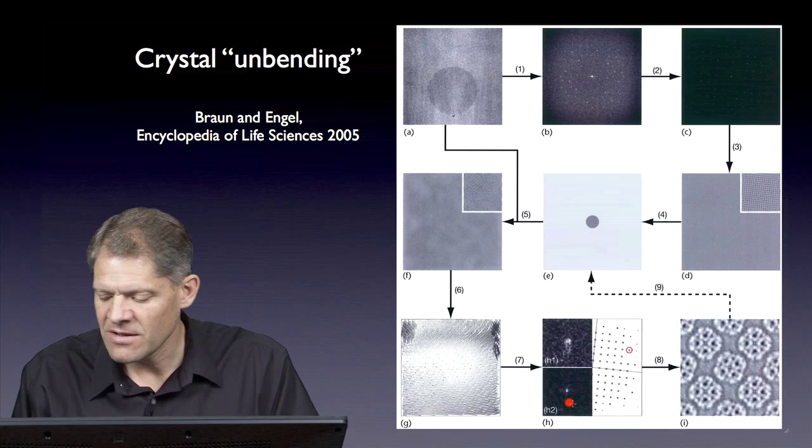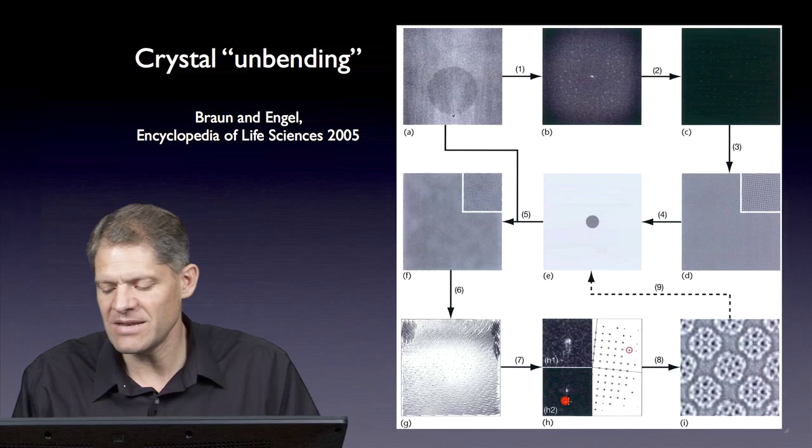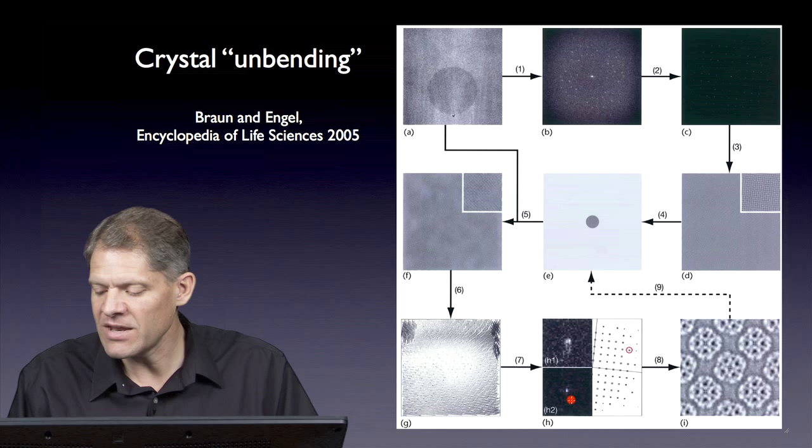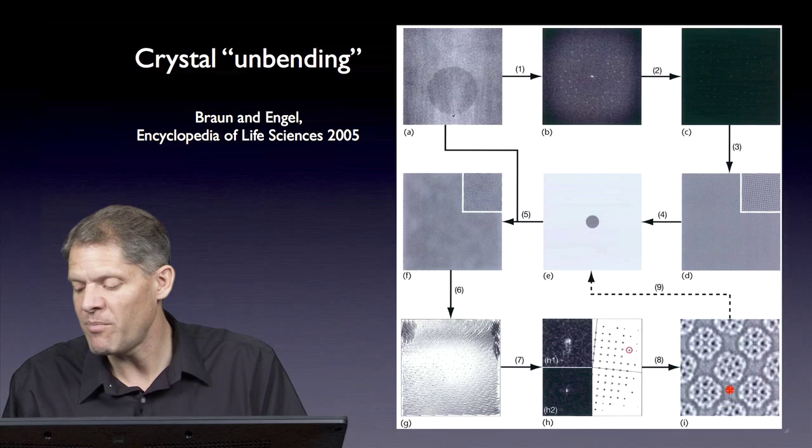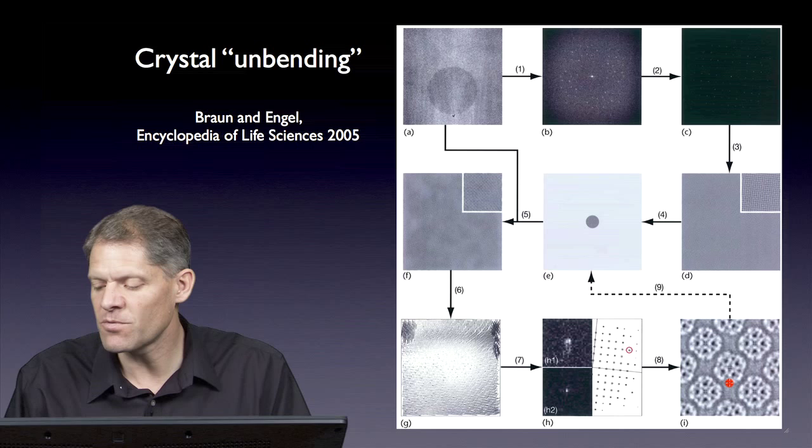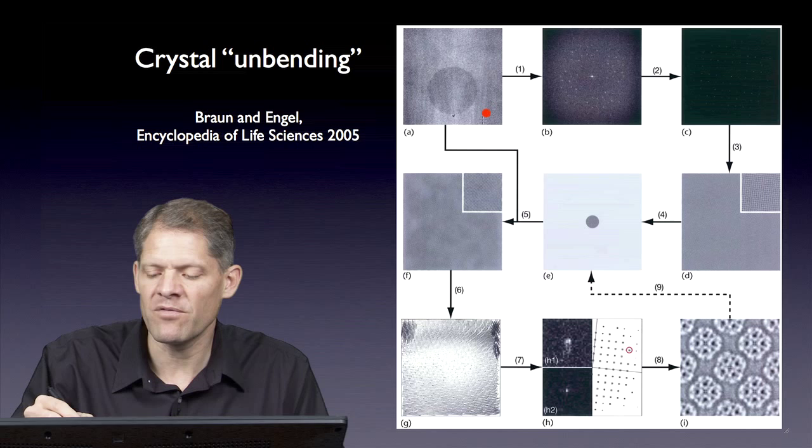Then we see in the Fourier transform of that unbent image that the diffraction spots are much cleaner. Here is before unbending and here is after unbending. From these unbent images, one can retrieve amplitudes and phases. If you mask those out and calculate an inverse Fourier transform back to real space, now you get a much cleaner picture with a lot more detail about the crystal. Once you have this, it can be used again as a reference to redo the cross-correlation map of how the crystal was bent. It can be unbent and this is an iterative loop until the best result is obtained.